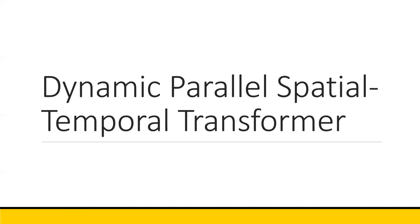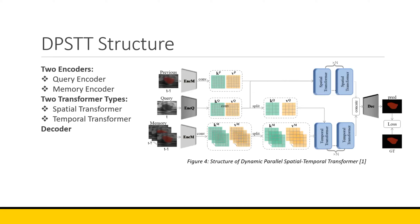Their proposed baseline network, called the Dynamic Parallel Spatial Temporal Transformer, is shown here at a high level. There are two encoders — a query encoder and a memory encoder — as well as two transformer types that can be stacked with each other: a spatial transformer and a temporal transformer. There is also a decoder to produce the mask of the lesion.